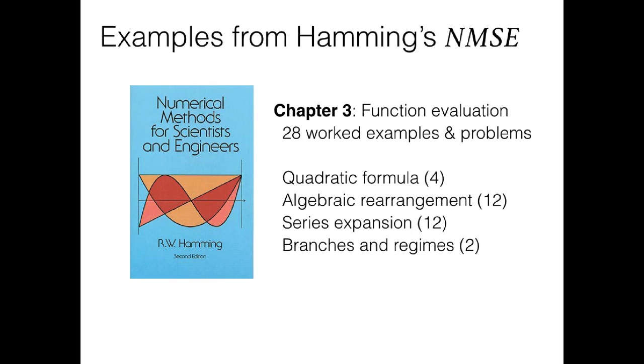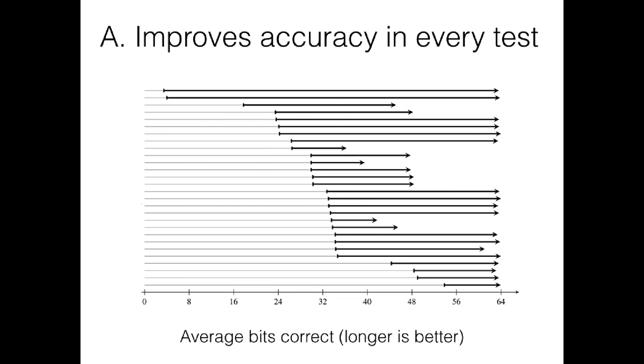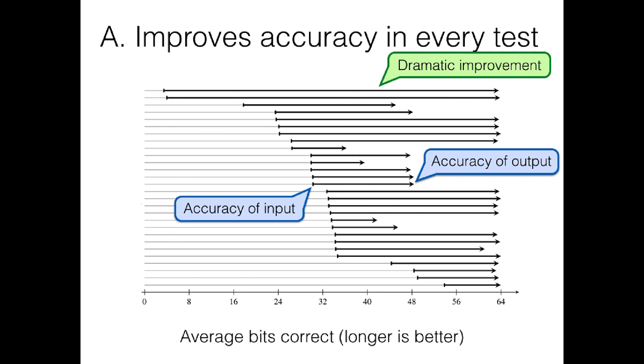Hamming's book has a chapter on exactly the sort of task that Herbie is trying to automate, accurately evaluating floating-point expressions. We took 28 worked examples and problems from this chapter and passed them as input to Herbie, asking to improve accuracy. We found that accuracy did indeed improve in every test. This graph shows each test as one line. And on this line, we draw an arrow, whose left-hand point is the accuracy of the input, and whose right-hand point is the accuracy of the output. You can see that each line points right, showing that the accuracy improved in every case. And in fact, this improvement was sometimes pretty dramatic, like in this topmost input, where the original barely got the order of magnitude correct for most inputs, and the output is almost perfectly accurate.